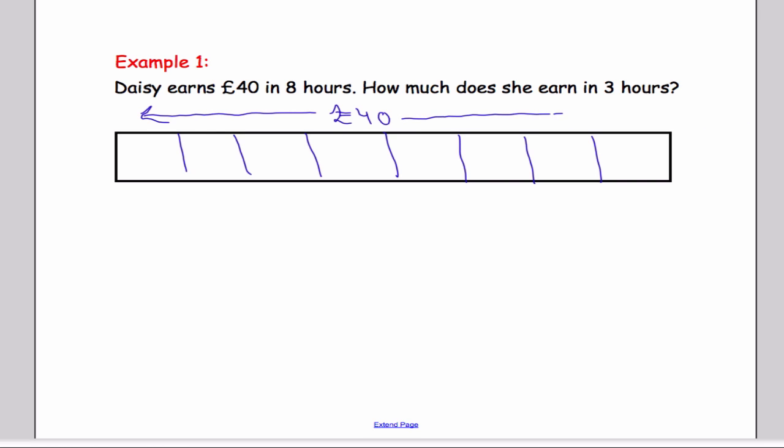I should be able to work out how much she earns in 1 hour by doing £40 divided by 8. In other words, I'm asking myself, what number can I put in these boxes so that it's all the same and that they add up to £40?